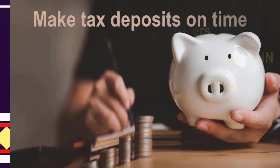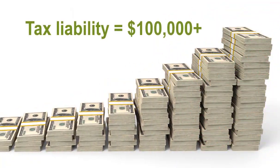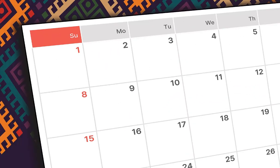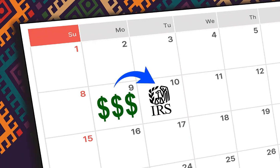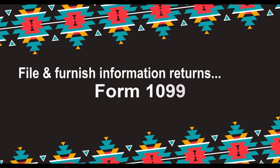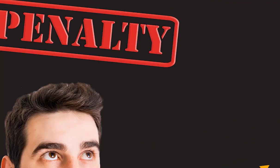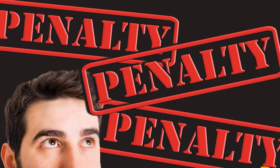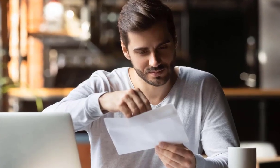Second, make tax deposits on time. If your tax liability reaches $100,000, remember you must deposit the tax so the IRS receives it by the next business day. It's important to file and furnish information returns, such as Forms 1099 and Forms W-2 on time. If you don't, the penalties can add up quickly for information returns filed late. Remember to respond to notices right away.